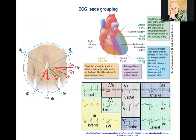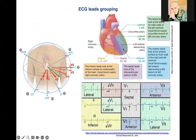For the anterior leads, V3 and V4: these leads look at the anterior surface of the right and left ventricle. The usual blood supply is the left anterior descending artery — the major coronary artery. Any segments of the heart supplied by this artery, if affected, result in pathologies best seen in leads V3 and V4.